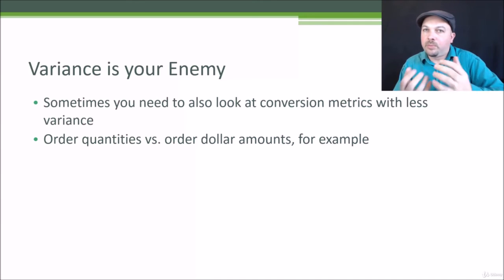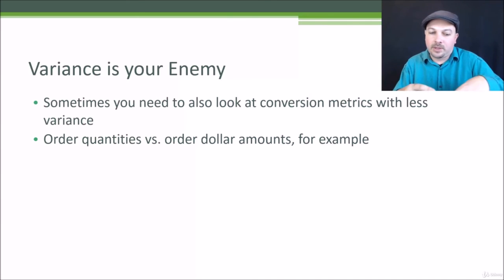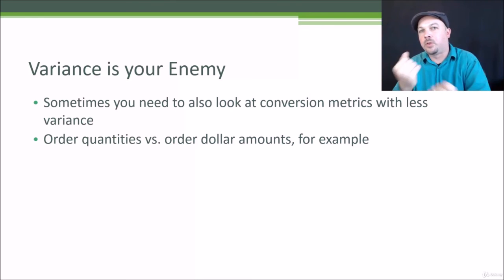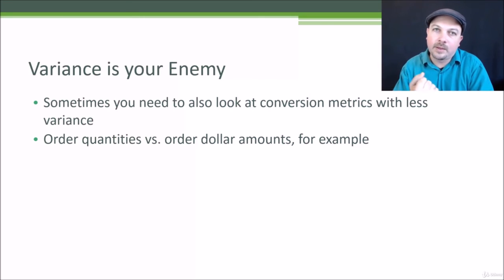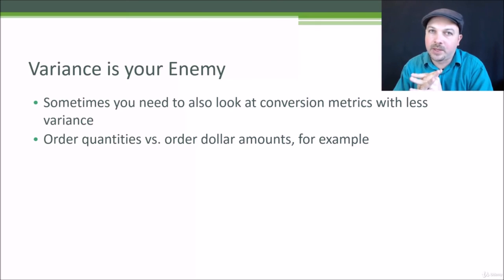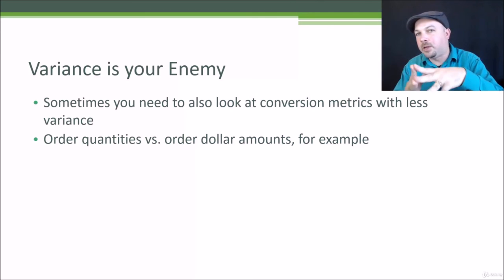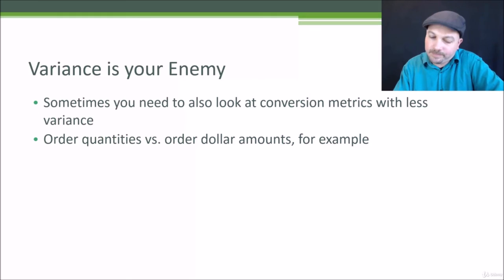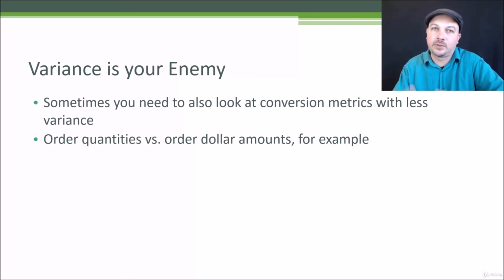Sometimes you need to choose a conversion metric that has less variance. The numbers on your website might mean you'd have to run an experiment for years to get significant results based on revenue or amount spent. Looking at order quantity instead has less variance, so you might see a signal there before you see one on revenue. At the end of the day it's a judgment call — if you see a significant lift in order quantities and a not-so-significant lift in revenue, you have to decide whether something real is going on. Statistics and data science can only tell you probabilities that an effect is real; it's really up to you to decide.